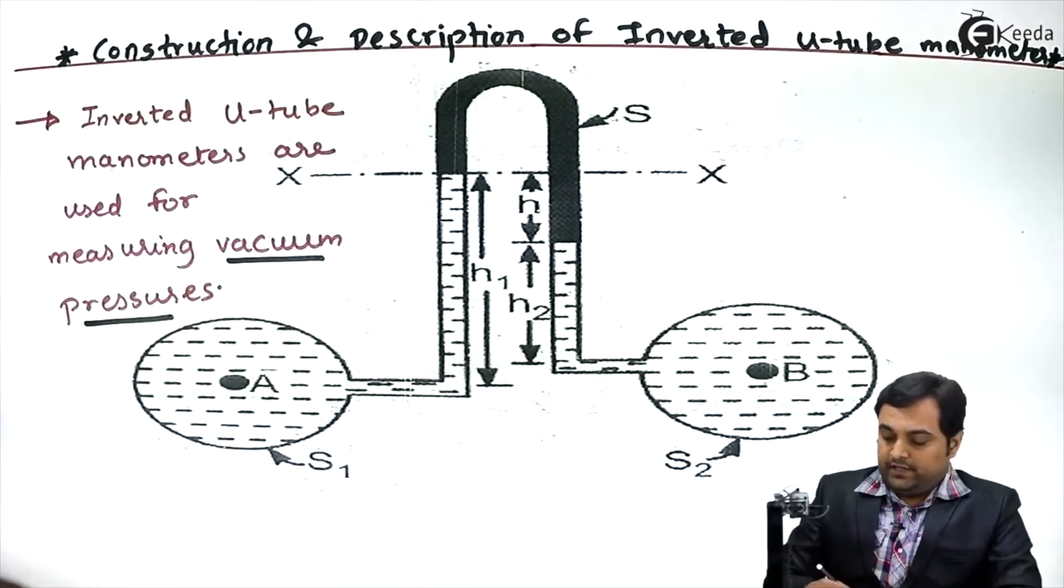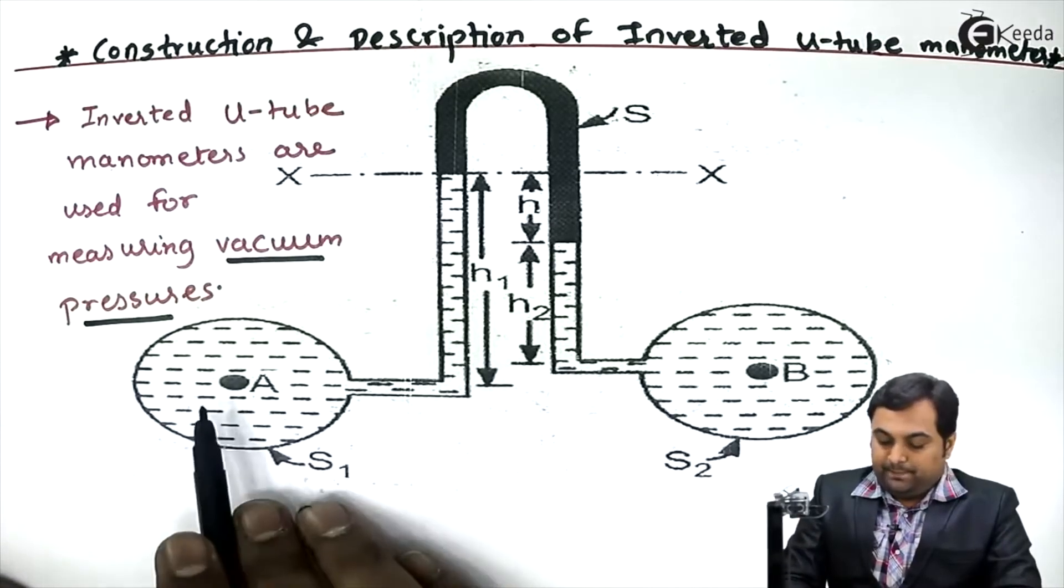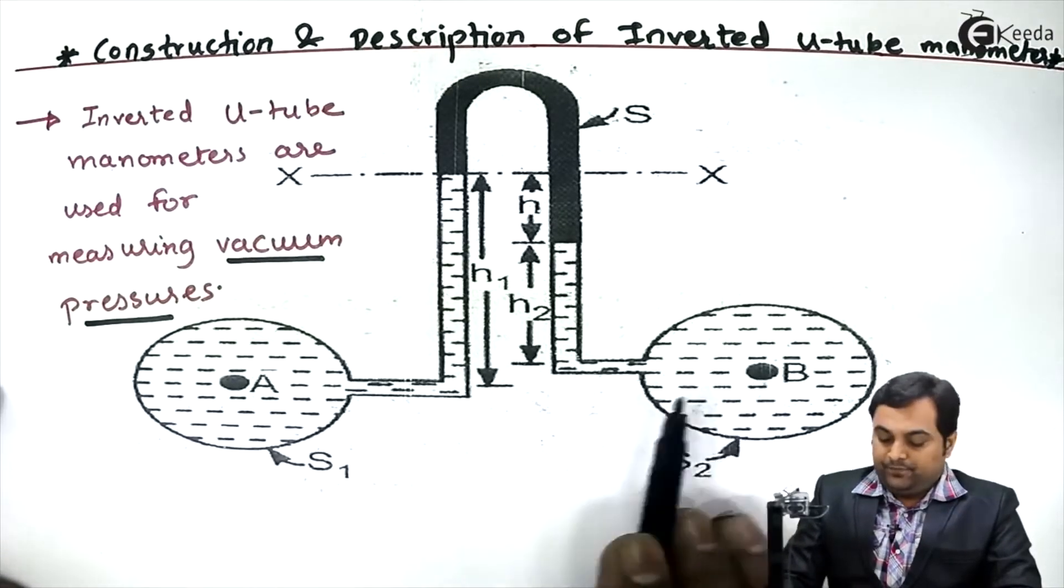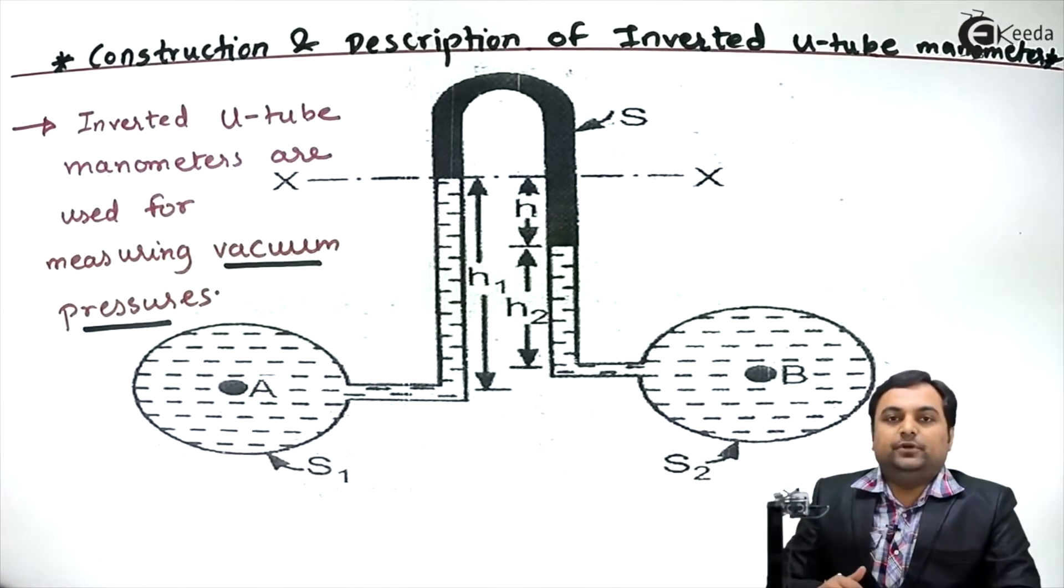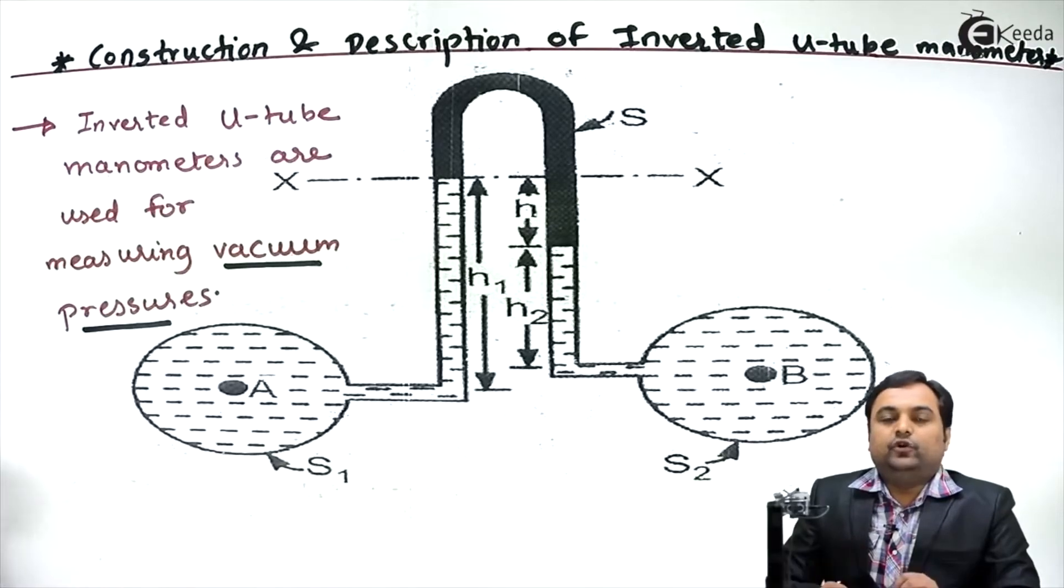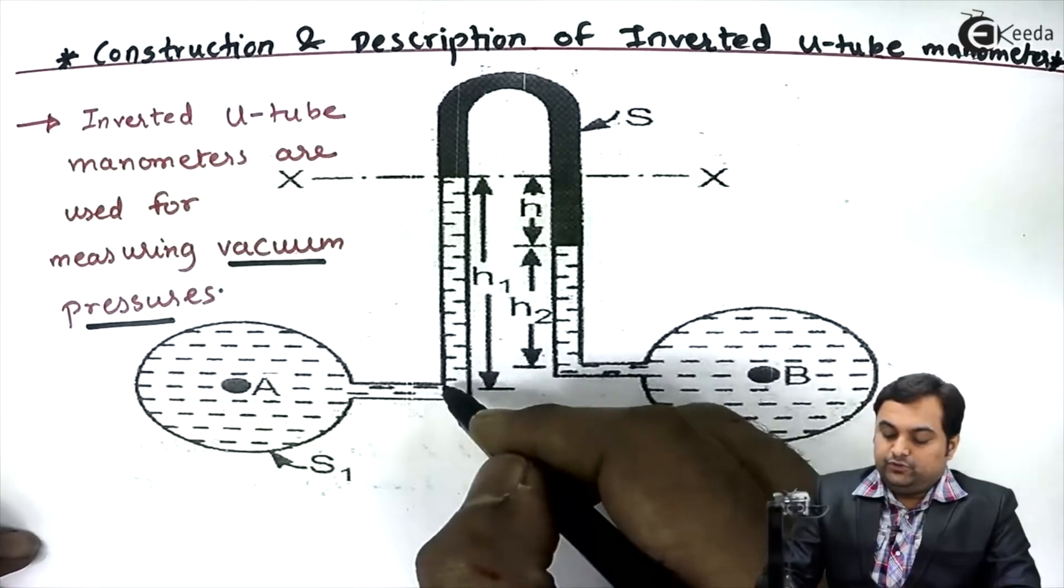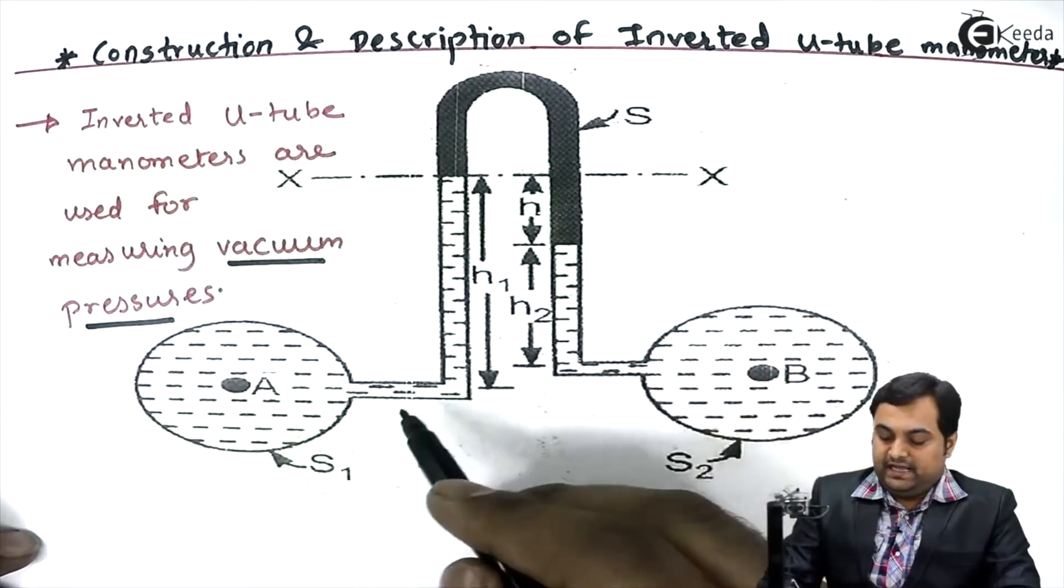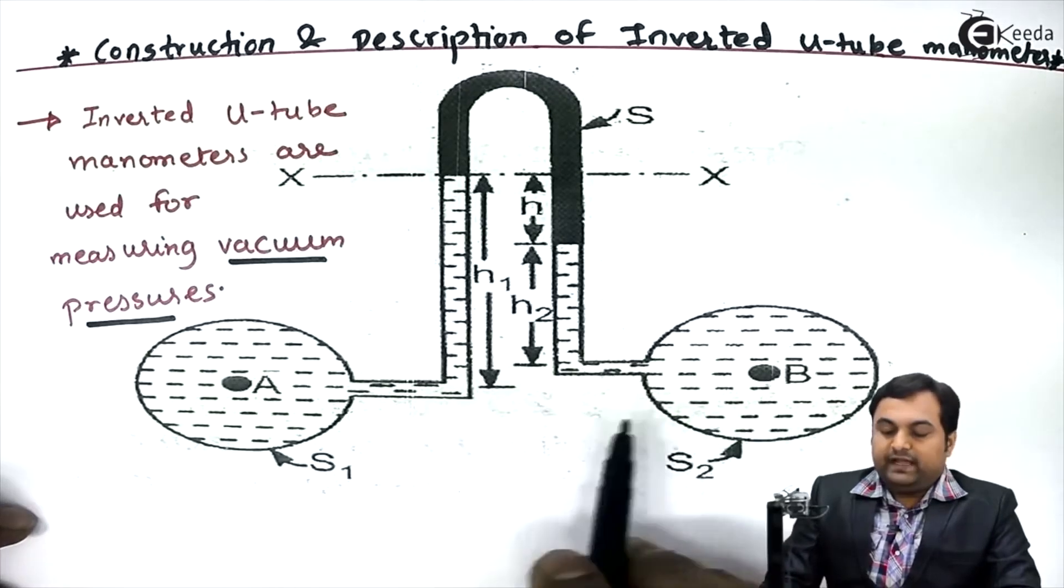As we can see here, we have two different pipelines: pipeline A and pipeline B. Both are containing the liquid which has pressure below atmospheric. So if you want to measure the pressure difference between two different pipelines, we can use inverted U-tube manometer as I have shown here in the diagram.